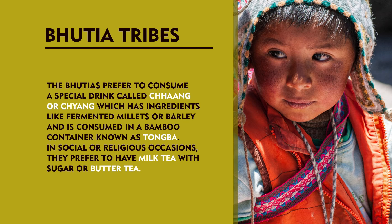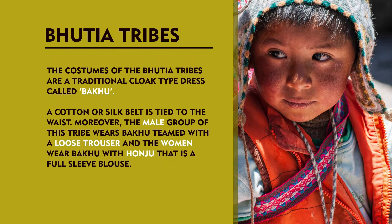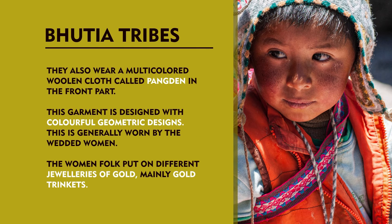In social or religious occasions, they prefer to have milk tea with sugar or butter tea. Amongst Bhutia tribes of West Bengal, marriage is held in high esteem. Usually, inter-marriage within their clans is prevalent. The Bhutia tribes also follow a very hierarchical structure of selecting both bride and groom. Discrimination amongst clans is widespread and marriage outside the community is not at all entertained. The costumes of the Bhutia tribes include a traditional cloak type dress called Baku. A cotton or silk belt is tied on the waist. The male group wears Baku teamed with a loose trouser and the women wear Baku with Honju, that is a full sleeve blouse. They also wear a multi-coloured woolen cloth called Pangden in the front part. This garment is designed with colourful geometric designs and is generally worn by wedded women.